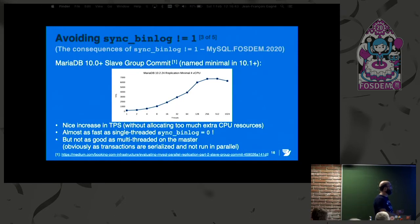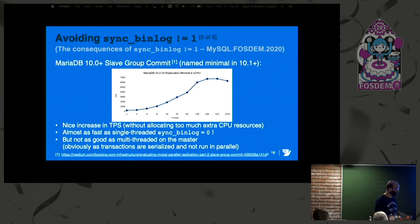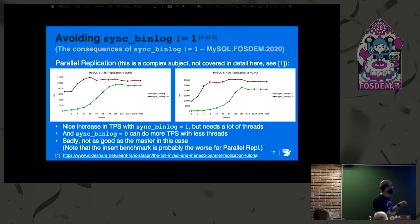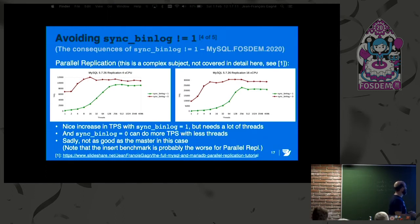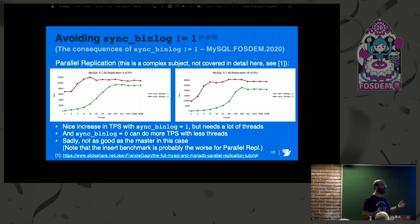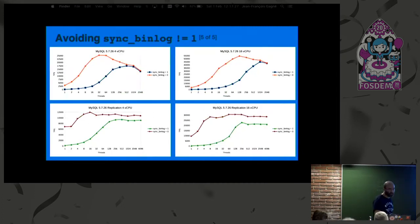With replication, MariaDB has something called slave group commit, which is pretty exciting — it basically gets the transaction throughput of Sync Binlog equals 0 with many threads without the consequences. With parallel replication on the insert benchmark — which is the worst benchmark for parallel replication due to high contention — Sync Binlog equals 1 does scale with threads, but Sync Binlog equals 0 is still better. Looking at all the graphs together, Sync Binlog equals 0 is still our best choice for maximum transactions per second.